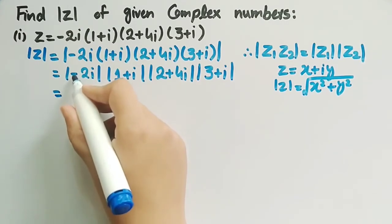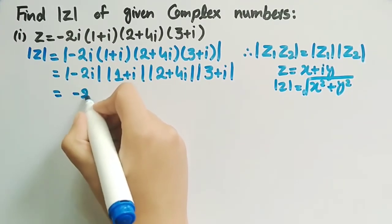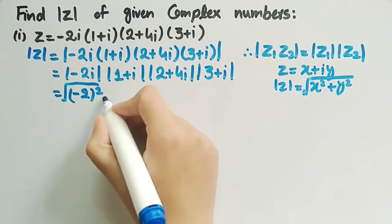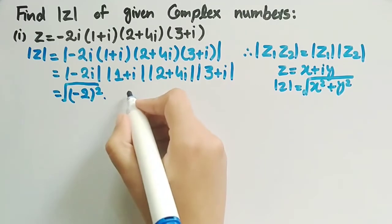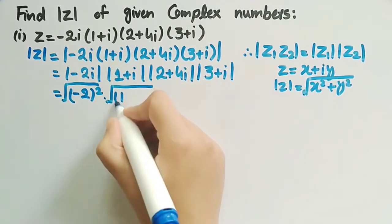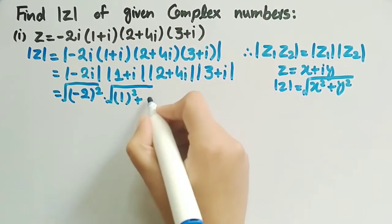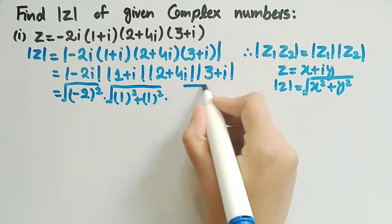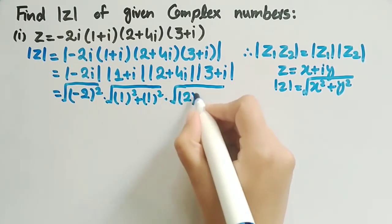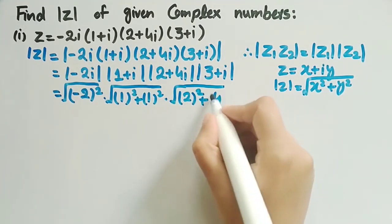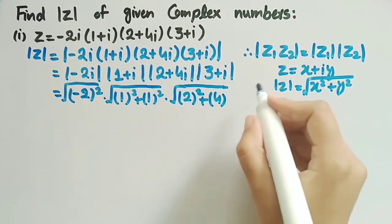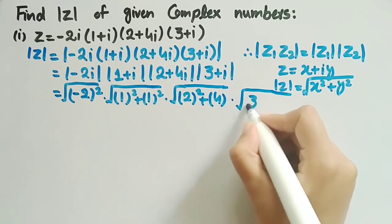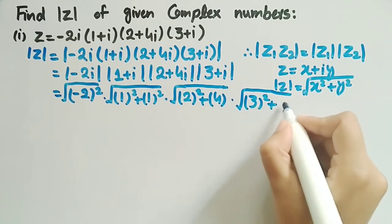Modulus of minus 2 iota will be equal to square root of minus 2 squared. Modulus of 1 plus iota will be equal to square root of 1 squared plus 1 squared. Modulus of 2 plus 4 iota will be equal to square root of 2 squared plus 4 squared. And modulus of 3 plus iota will be equal to square root of 3 squared plus 1 squared.